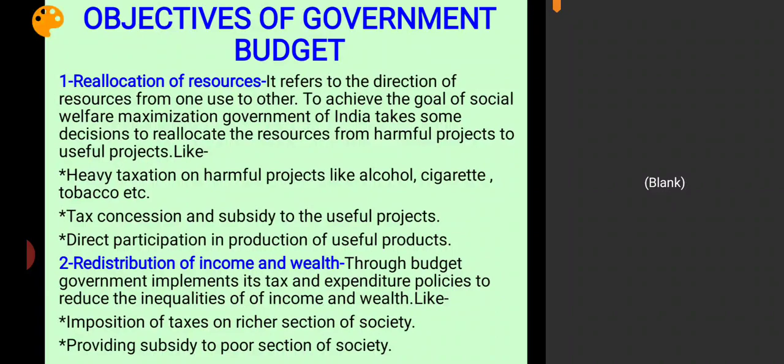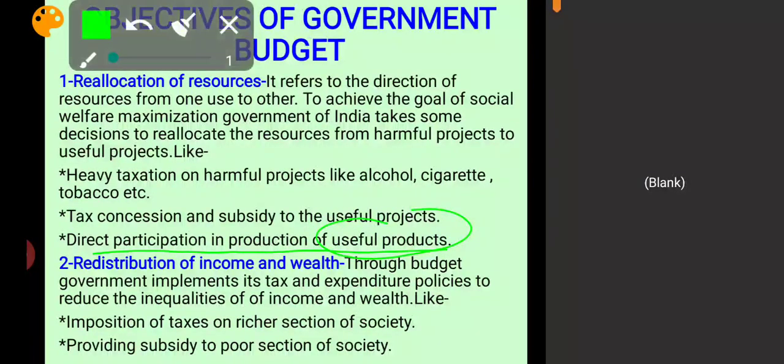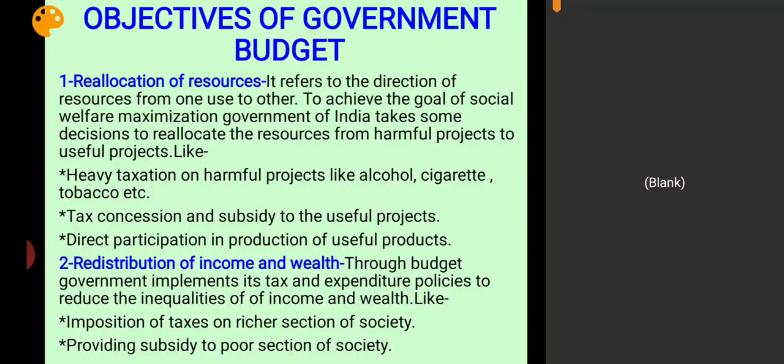Through these steps government of India is able to achieve the goal of social welfare maximization. Another step is direct participation through budget — government of India announces establishment of more and more production units under the public sector for the production of useful products. These are the three steps government of India takes through budget for reallocation of resources.